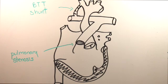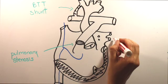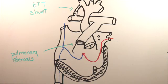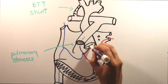Let's follow the blood flow through the circulation. Blue blood enters the right ventricle and mixes with the red blood coming back from the lungs. The blood can then exit the heart either through the pulmonary artery or the aorta. Because of the pulmonary stenosis, most of the blood exits the aorta.